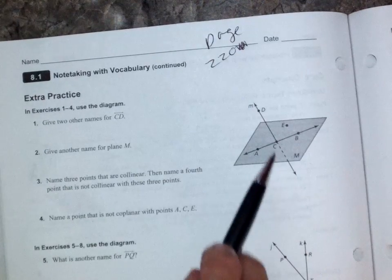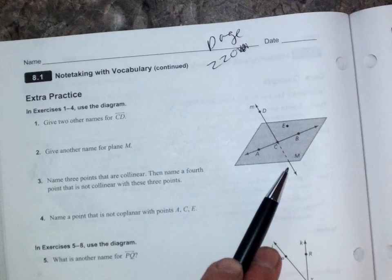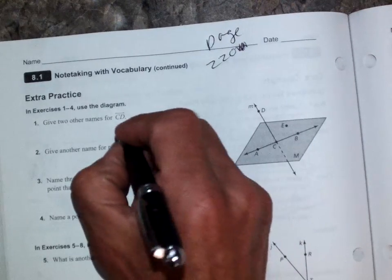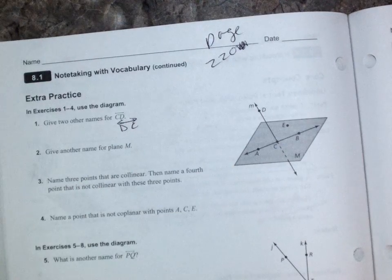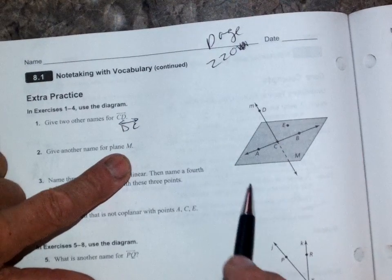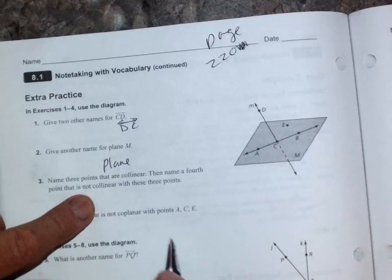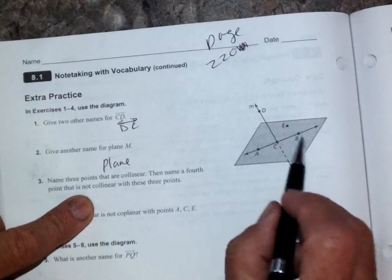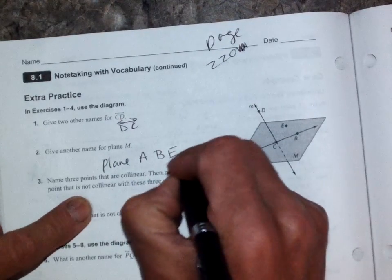And it talks about, give two other names for CD. Well, here's CD. You can also call it DC or line M. Right. CD or DC, right. Or line M. Another name for plane M. Well, you can go three points. You can call it plane. Believe it or not, you can do like this. Plane A, B, E. Make sure they're not collinear. A, B, and E. Okay.